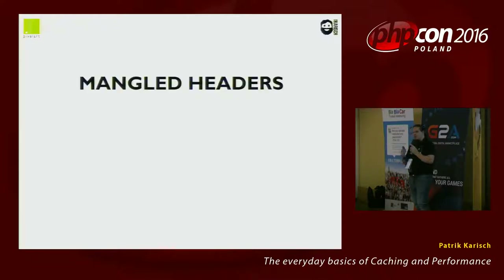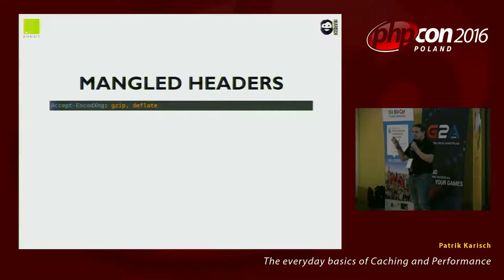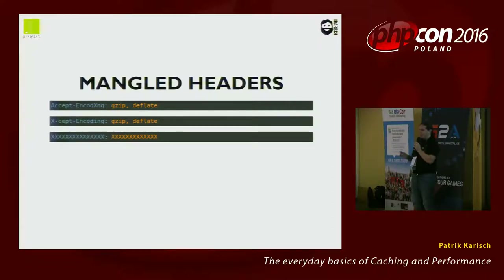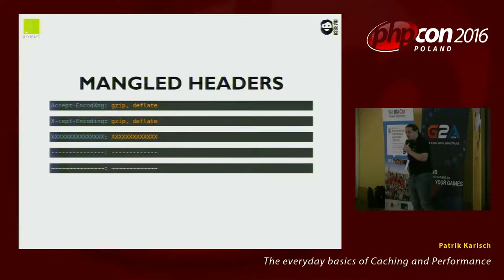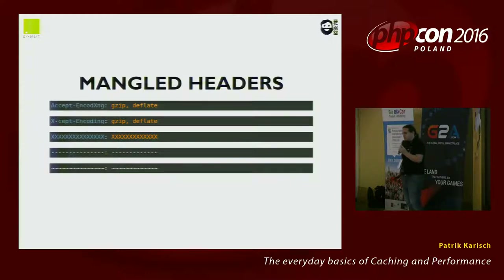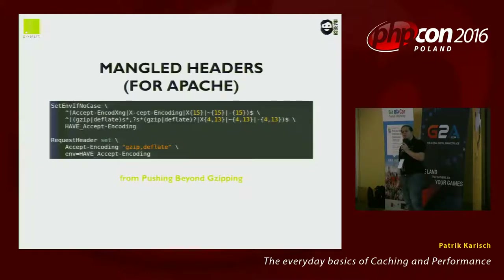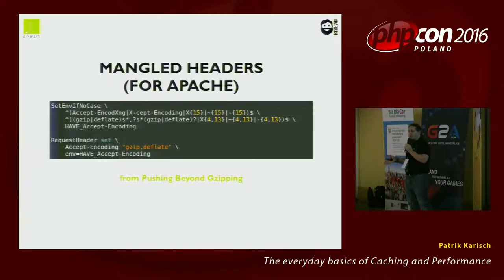There can also be mangled headers from proxy caches and even anti-virus software installed on the user's computer — things like 'Accept-Encodxing' or 'Accept-Encoding: *' or 'all-tiled'. This can affect 1% to 5% of your users — not nice, meaning you can't compress your response and your traffic increases. To tackle this, copy a snippet into your Apache config. This regex matches all those mangled headers and sets a rewritten header to have a clean Accept-Encoding. Simply copy it — it doesn't matter if you have a user base with these problems or not.